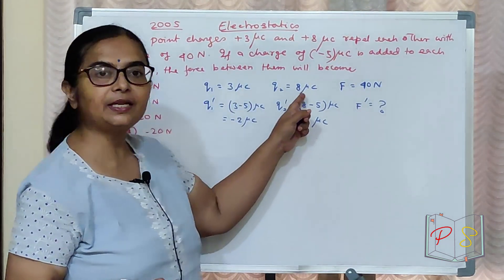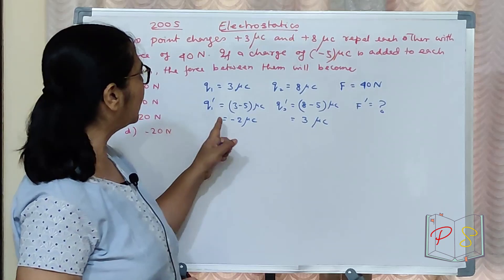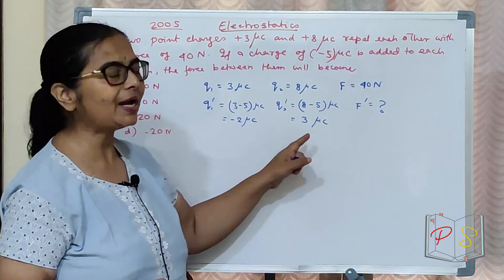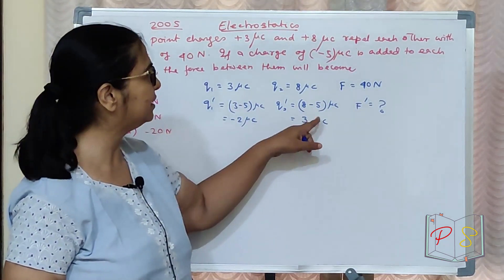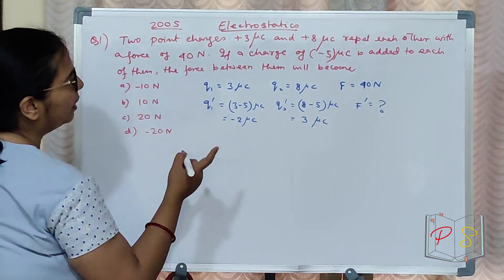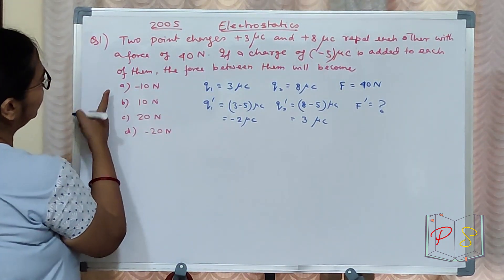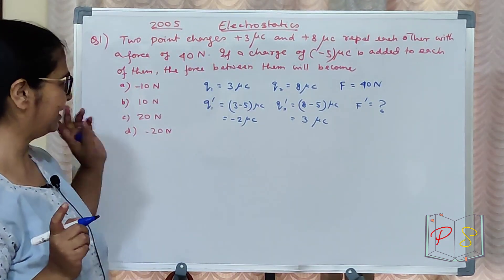See, initially both were positive charges, so there was a repelling force. Now one became minus and one became plus. Minus 5 was added. So minus 2 and plus 3. This became an attractive force. Attractive force means option A or D.